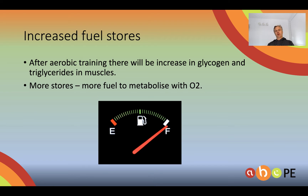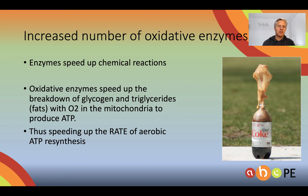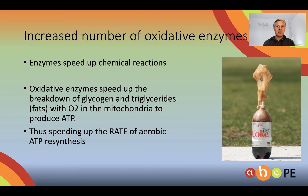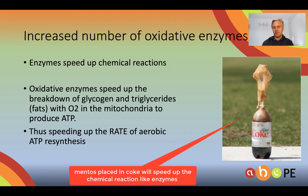That is, the oxygen can combine with food and produce aerobic ATP. Speaking of food, we also increase fuel stores as a result of aerobic training — specifically the fuels required by the aerobic system: glycogen and triglycerides. Whilst increased fuel is useful, being able to break that fuel down faster is probably just as important. Oxidative enzymes are charged with that responsibility inside the muscle. We get increased oxidative enzymes, which means we can speed up the breakdown of food fuels in the presence of oxygen. This all happens inside the mitochondria, meaning we're speeding up the rate of ATP resynthesis. To the right you can see the coke bottle — I liken an oxidative enzyme to a Mentos put into a coke bottle; it speeds up that carbonation process.